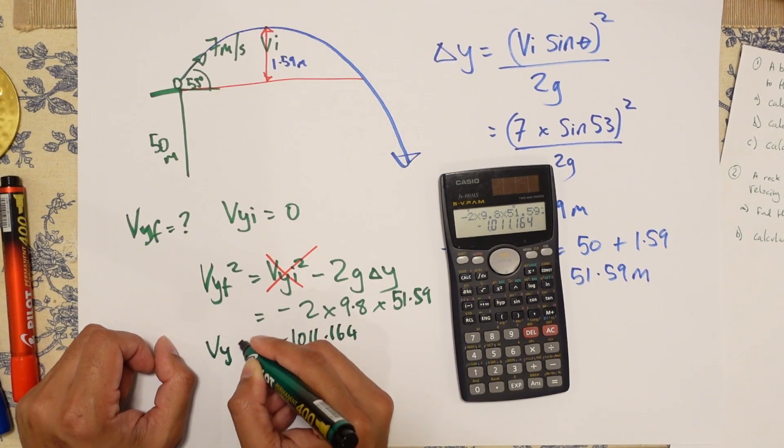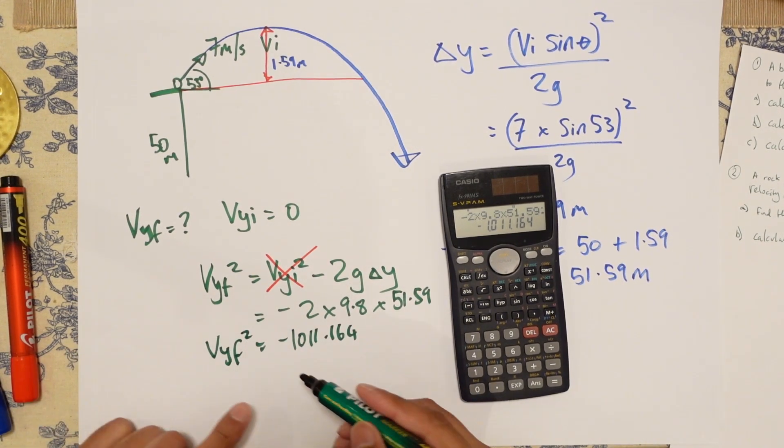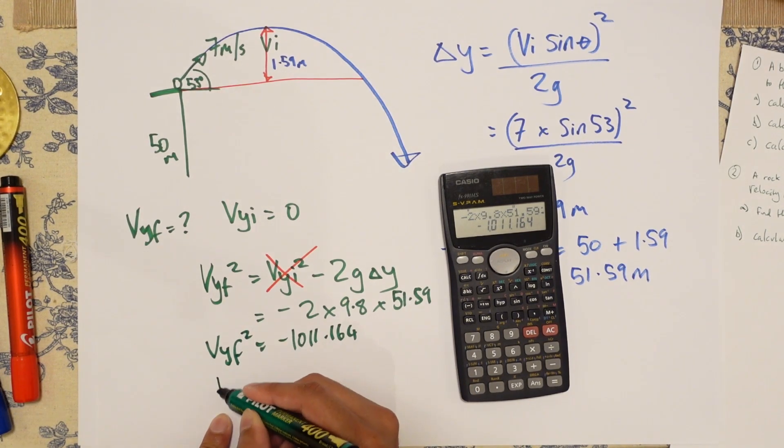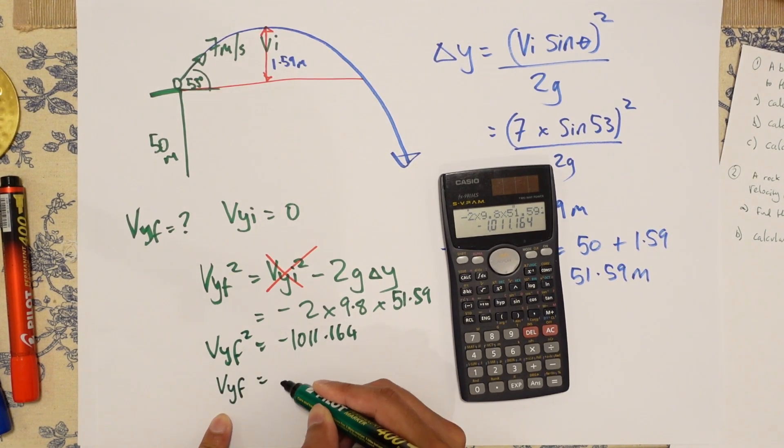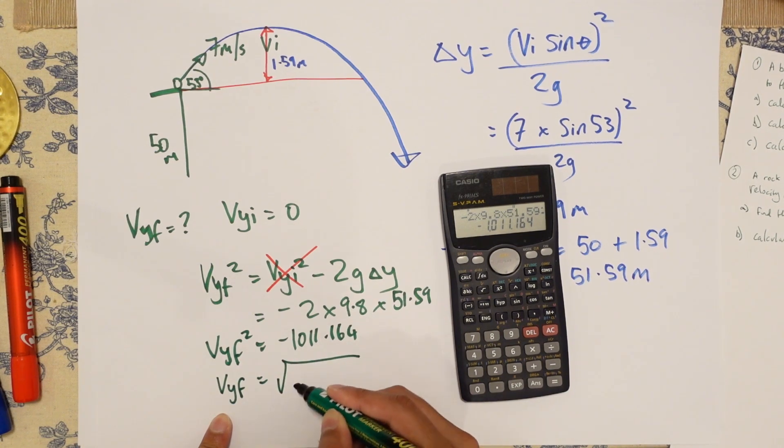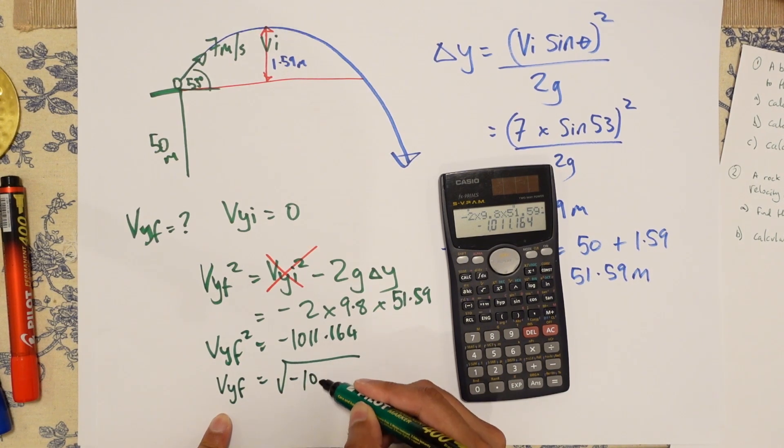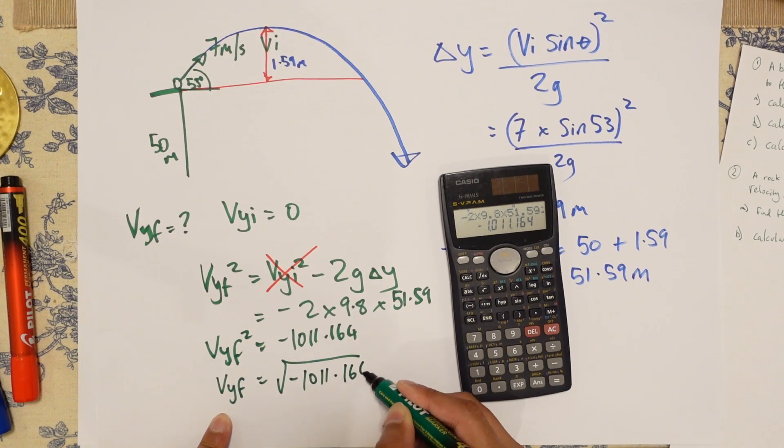Let's get your calculator out. So minus 2 times 9.8 times 51.59 is equal to minus 1011.164. Now, this is for VYF squared. So you've got to square root this.